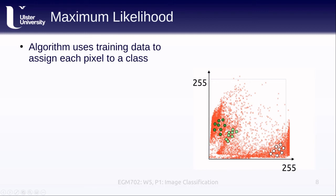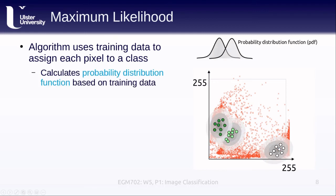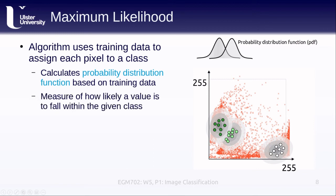We'll show how maximum likelihood classification works. In this example, we have three different training classes shown here, with the rest of the pixels displayed as red x's. Using the training data, the algorithm calculates a probability distribution function, or PDF, for each of the classes. The PDF is a measure of how likely a given pixel value, or combination of pixel values, is to fall within the given class. So a pixel located here would be more likely to fall within the dark green class, as it's close to the peak of the probability distribution. Note that this approach usually assumes that your training data are normally distributed, which is not always the case — keep that in mind when selecting training samples.